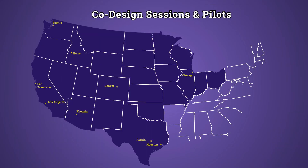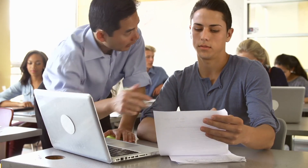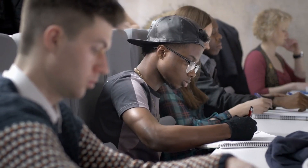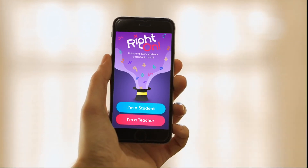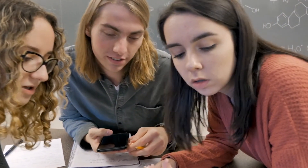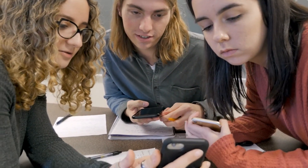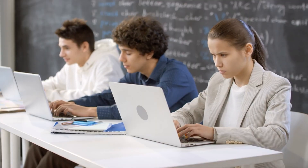After co-designed sessions and pilots across the country, teachers are already integrating Right On into pre-existing classroom practice. For example, it can be used as a five-minute do now or exit ticket, or a 30-minute test review. Right On supports both one device per student as well as one per team, and in environments where student devices are not allowed or unavailable, school laptops can also be used.